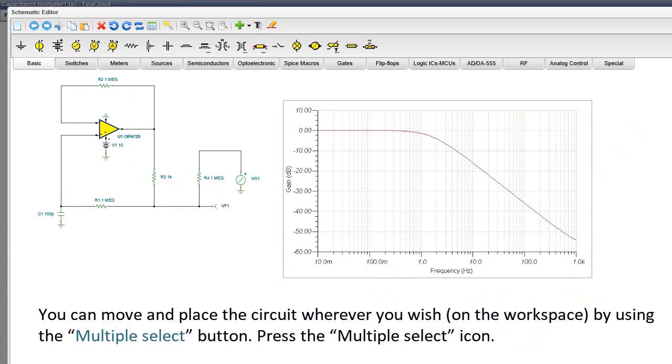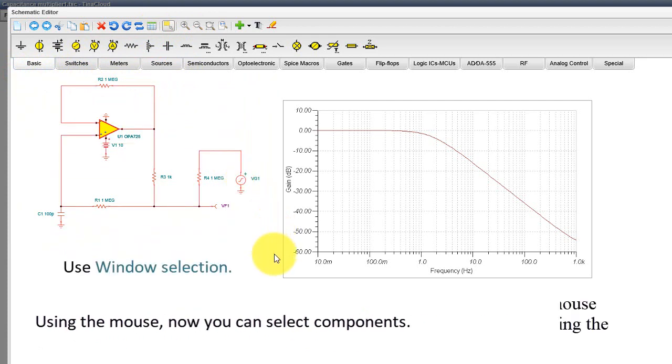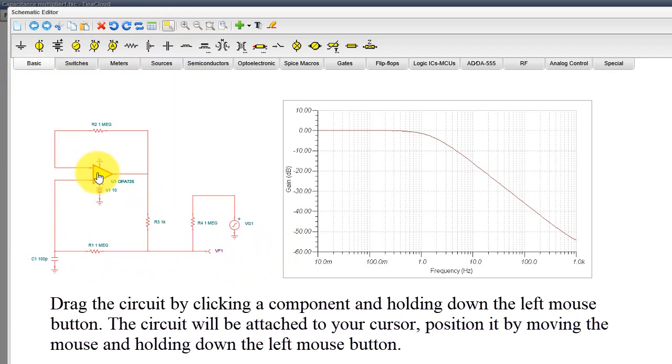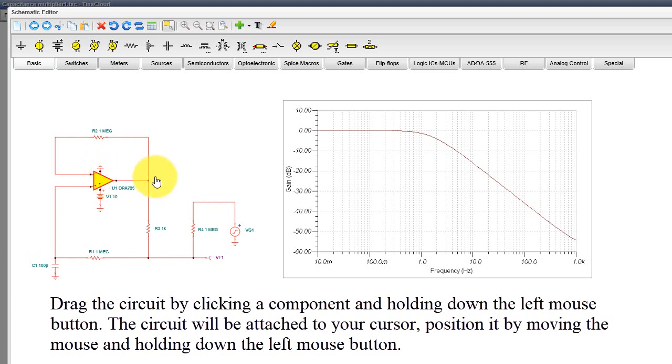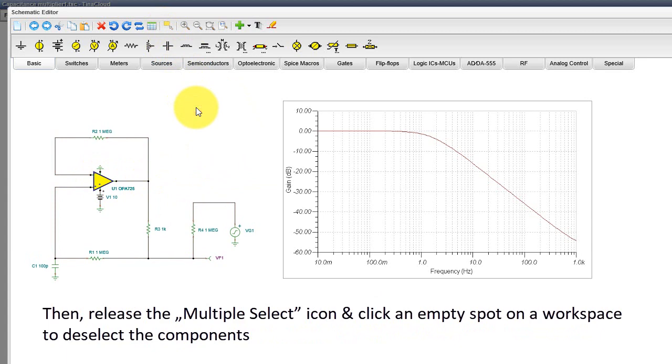You can move and place the circuit wherever you wish on the workspace by using the Multiple Select button. Press the Multiple Select icon. Using the mouse, now you can select Components. Use Window Selection. Drag the circuit by clicking a component and holding down the left mouse button. The circuit will be attached to your cursor. Position it by moving the mouse and holding down the left mouse button. Then, release the Multiple Select icon and click an empty spot on a workspace to deselect the components.